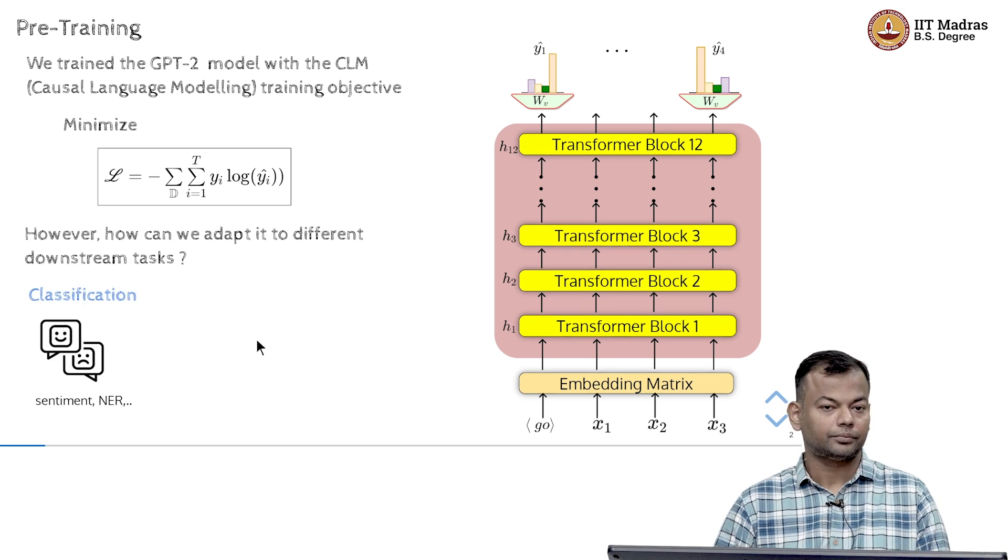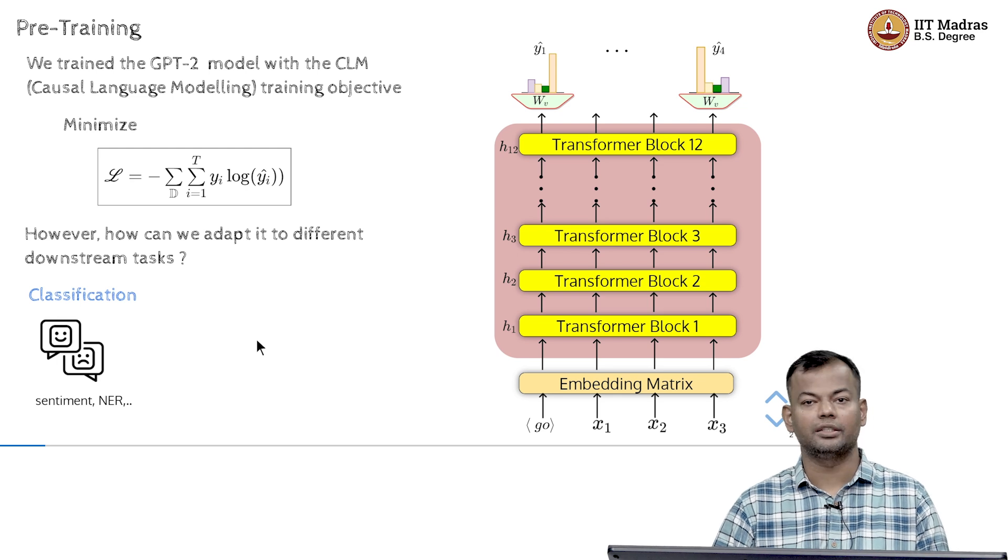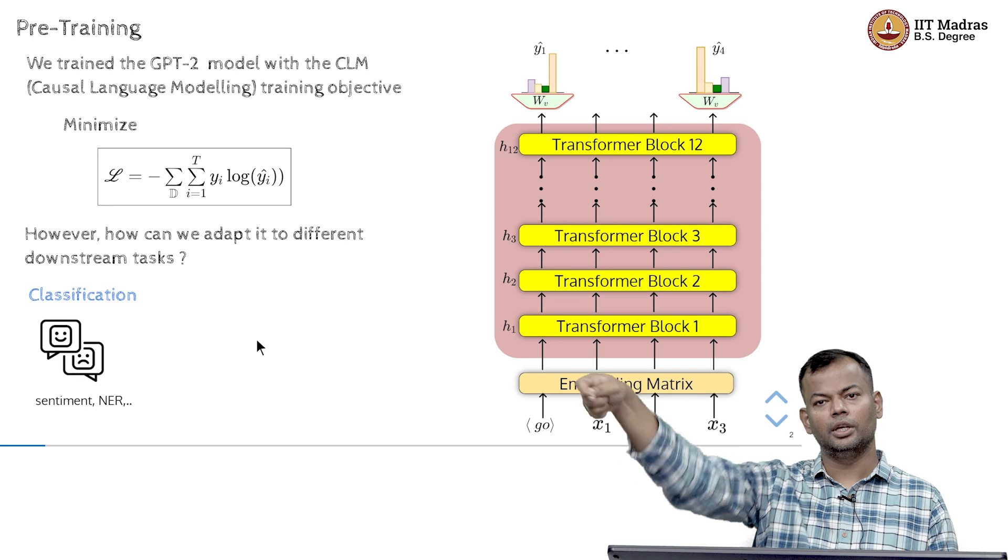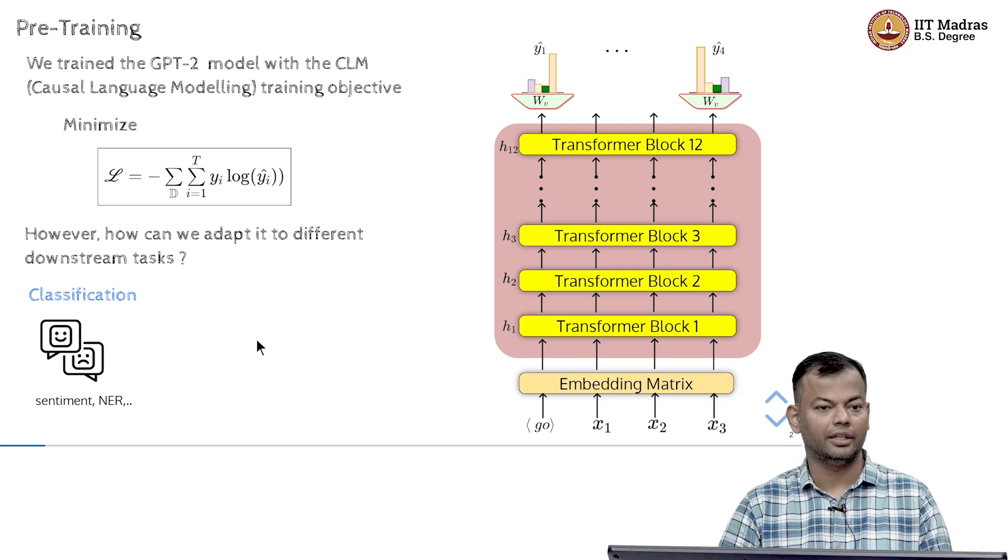So, can we adapt it to different downstream tasks now? So, I want to do classification. This is a general purpose model that I have trained and it has only been trained on next token prediction. Now, I wanted to do sentiment classification, which is given a sentence, tell me whether it is positive or negative.